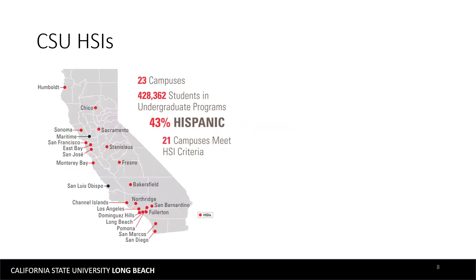The CSU system is the nation's largest system, comprised of 23 campuses, 21 of which are designated Hispanic Serving Institutions, or HSIs, as indicated by the campuses with a red dot. As of January 2019, the CSUs enrolled nearly half a million students, 43% of which identified as Hispanic or Latino.